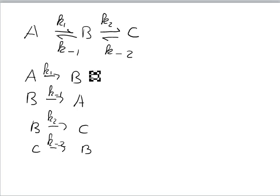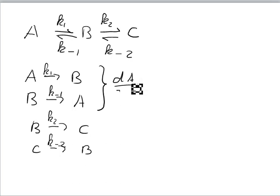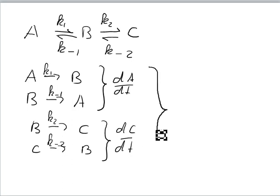What we can do is we can say okay for A to find the rate equation for A we just look at these two rate equations here. Likewise for C we only deal with these two rate equations because C appears only in these two equations. And for B we have to deal with all four of them because B appears in all four of these equations.